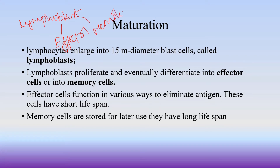The lymphoblast divides into two types of cells: one is the effector cell and one is the memory cell. The effector cell is the actual active cell.